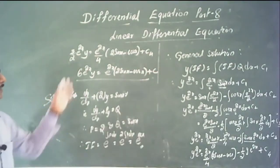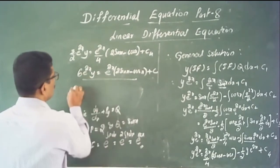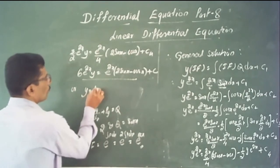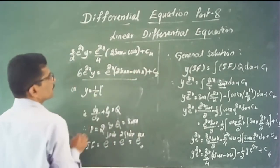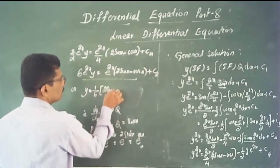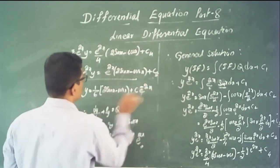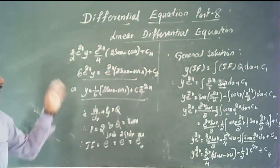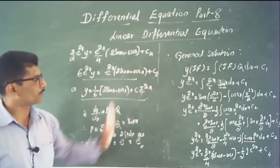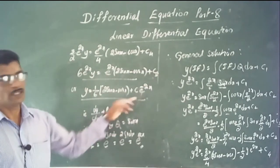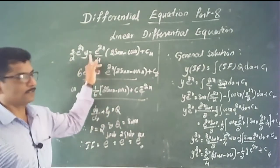Therefore y = (1/6)(2 sin x − cos x) + C·e^(−2x). This is the general solution of the given differential equation. For annual exams, working up to this step is sufficient.